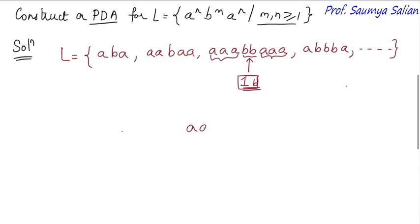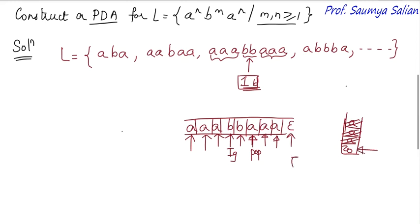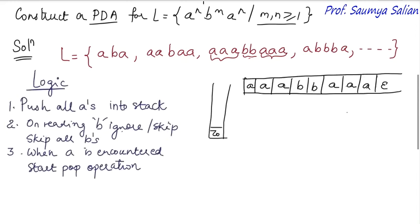Now let's consider the logic we'll use. Consider this example string with this stack. On reading each A, push it to the stack. When a B is read, perform a skip operation — ignore it and keep the stack as-is. After all B's, when an A is encountered, start performing pop operations: for each A read, pop the A at the top of the stack. When epsilon is read and the stack top is Z0, we reach the final and accept state.